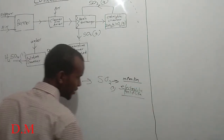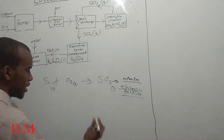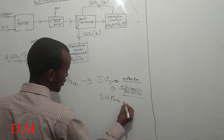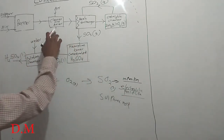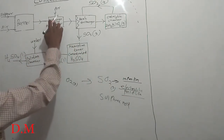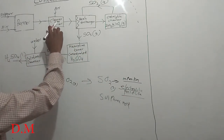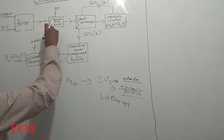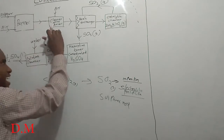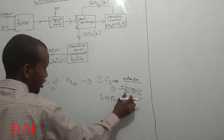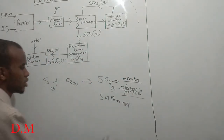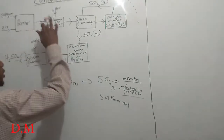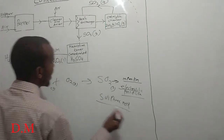Then the gas is dried. We use sulfuric acid to dry it. This stage — the cleaner and the dryer — is where impurities are removed and the gas is dried using sulfuric acid.